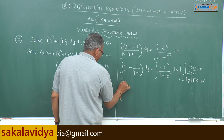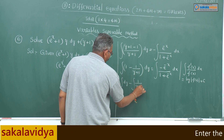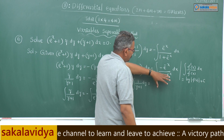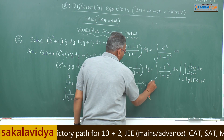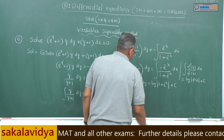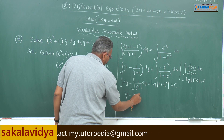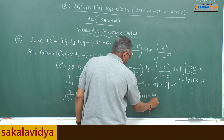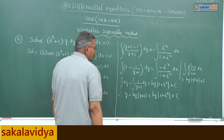So this can be written as integral dy minus integral of 1 by (y plus 1) dy. The right hand side — the derivative of 1 plus e^(minus x) is e^(minus x) — so we can write log|1 plus e^(minus x)| plus constant of integration. This is nothing but y minus log(y plus 1) equals log(1 plus e^(minus x)) plus C. So this is the solution.